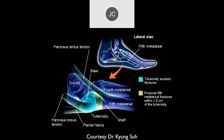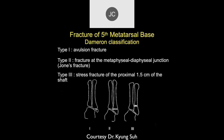The peroneus brevis tendon attaches here and the plantar fascia comes across here. There are typically three types of fractures defined at this location. One is an avulsion fracture, typically in plantar flexion, where you have avulsion primarily from the peroneus brevis tendon attachment, which pulls off the bone — usually just the distal tip, the tuberosity. Then there's a type two, which is a fracture at the metaphyseal-diaphyseal junction, commonly called a Jones fracture. However, the nomenclature is not uniformly used in clinical practice.